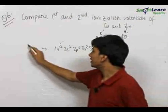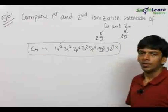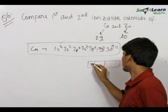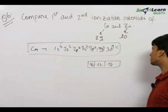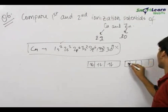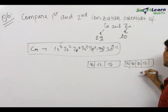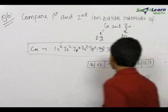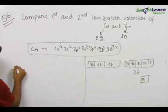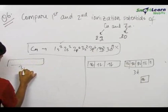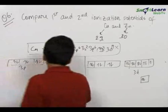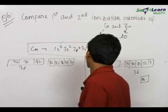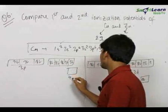Now, actually what happens is that the electronic configuration of copper is not this. Let us draw this. We have filled in the 3p orbitals. After filling the 3p orbitals, we have the 3d orbitals and the 4s orbitals. Now, instead of filling 4s2 and 3d9, if we did it so that the 3p orbitals are fully filled and we fill up the 3d orbitals and the 4s has only one electron.